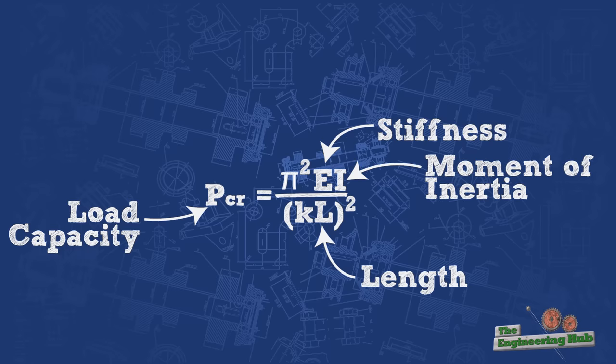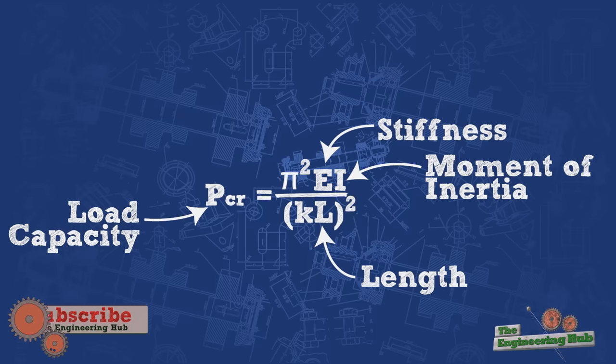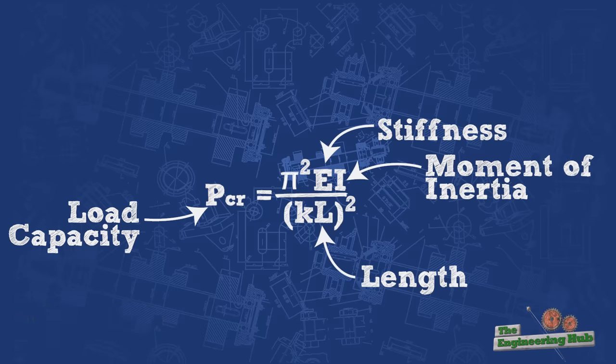If you want to learn more about the effects of the shape, check out our previous video on the secret of the I-beam. Now going back to the equation, we can see an additional pi-squared term that arises from the solution of the differential equation and is related to the shape of the buckled curve, which follows a sinusoidal function.